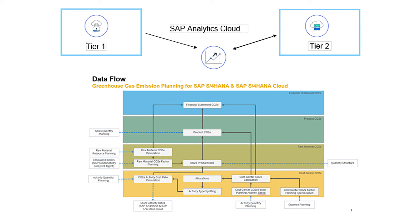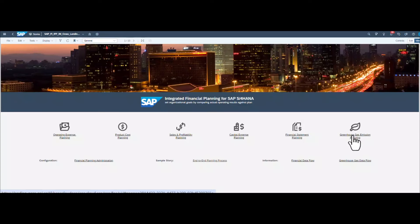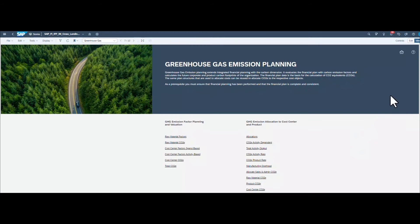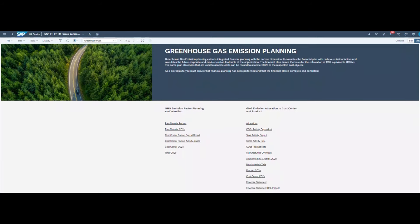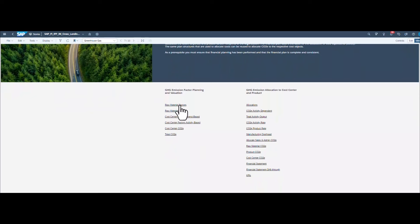It allows headquarters to plan the structure of subsidiary company's future operations to know which activities are driving the carbon footprint, so they can look at where and how they can reduce it and make better decisions. SAP delivers the integrated financial planning for SAP Sperana business content with pre-built models, stories and data actions for greenhouse gas emission planning in SAP Analytics Cloud, which is fully integrated with SAP Sperana Cloud using OData APIs.